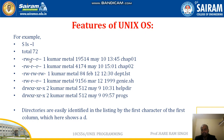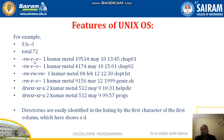Next is rw dash — the first three letters represent the owner's permissions. The owner who created chapter01 has read and write permission on that file, but does not have execute permission. The next three, r dash dash, represent the group owner. Anyone belonging to the same group has read-only permission; they don't have write or execute permission.